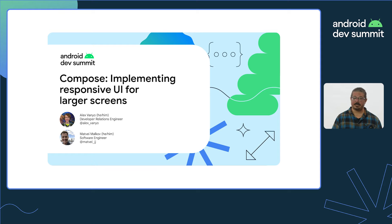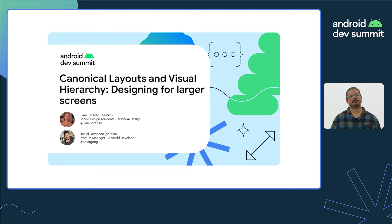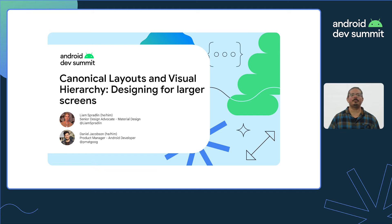If you're new to large screen optimization, the topic may seem daunting. To make this easier, we're creating new tooling and guidance, and the effort will benefit your app across tablets, foldables, and more. To learn more about the latest best practices when implementing UI with our new UI toolkit, Jetpack Compose, I highly recommend checking out Compose: Implementing Responsive UI for Larger Screens. If you or your design team want to learn more about how to design for large screens first, be sure to check out Designing for Larger Screens, Canonical Layouts, and Visual Hierarchy to learn more about straightforward ways of thinking about designing your UI with Chrome OS and all display sizes in mind.